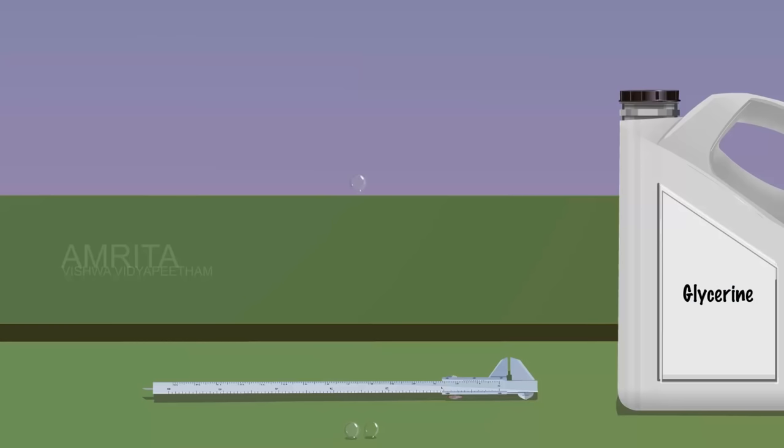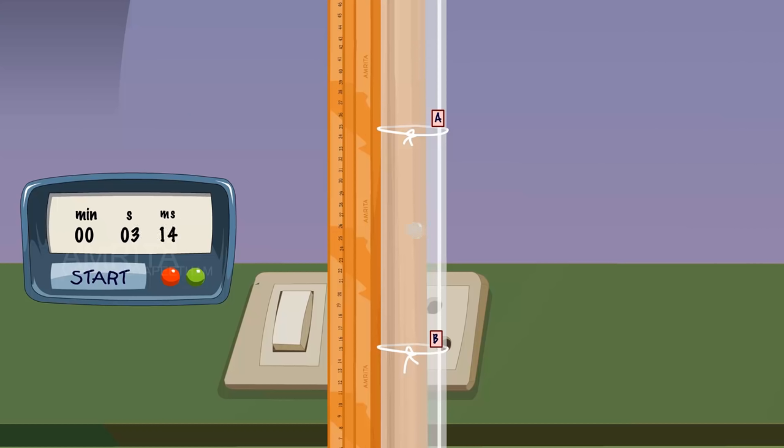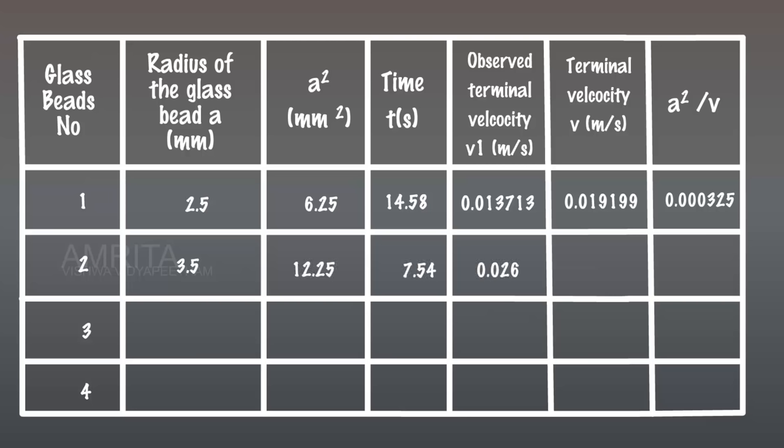Now, take another bead of diameter 7 mm and note the time taken to travel the distance 20 cm. Record the values in the tabular column.